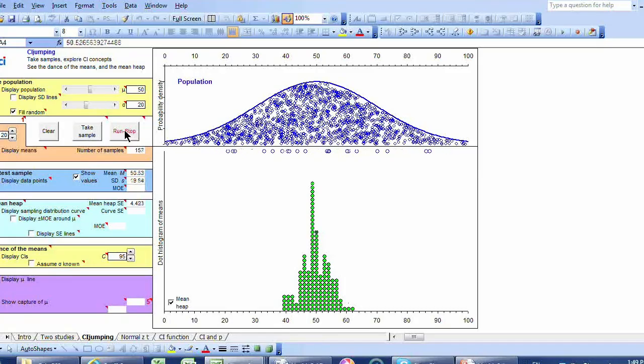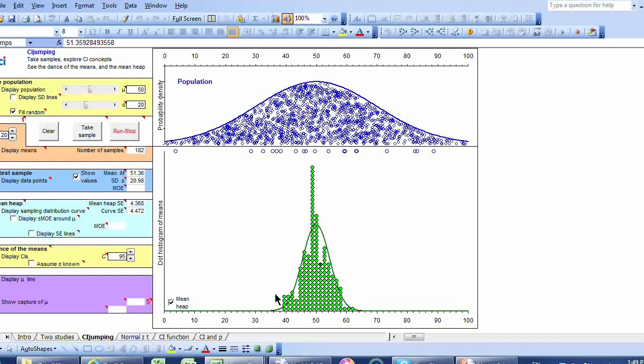All I've done is simply collapse the dance of the means down into a pile. Another quite nice shape, isn't it? Bunched more tightly together than the population is. I'm going to put a curve on that, this nice smooth bell-shaped curve, which is actually called the sampling distribution of the sample mean. Another beautiful curve, and in fact it turns out to be a normal distribution.